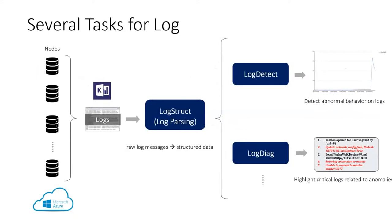To give a better understanding of logs, we show the main process about logs in real practice. There are three phases involved with logs: log parsing, log detection, and log diagnosis. In the log parsing phase, raw logs are read from nodes, queried and transformed from unstructured logs into structured ones. In the log detection phase, structured logs are processed with anomaly detection and abnormal behaviors are identified. In the log diagnosis phase, the root cause of anomaly will be located in critical logs. So log parsing is a preparation process for log-based anomaly detection and diagnosis, and achieving high accuracy for log parsing is significant for later phases.